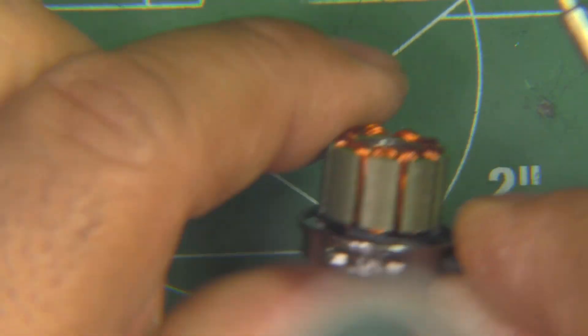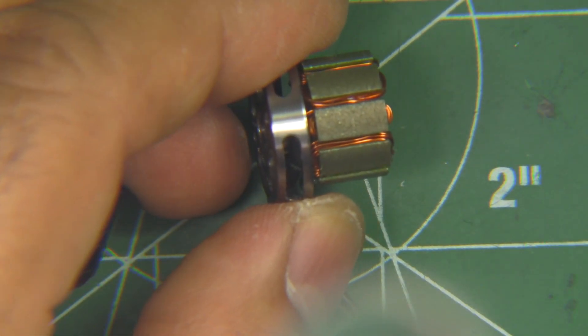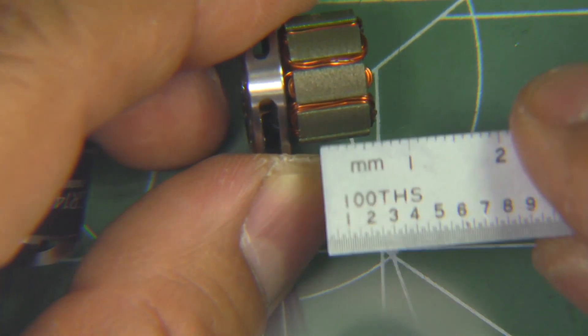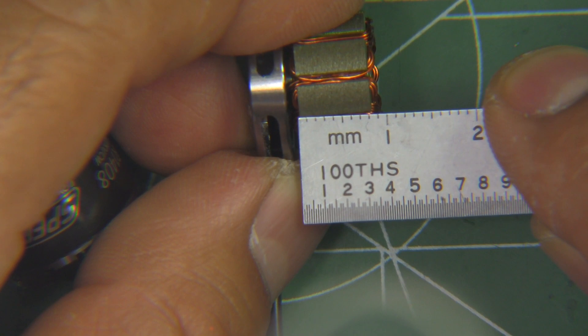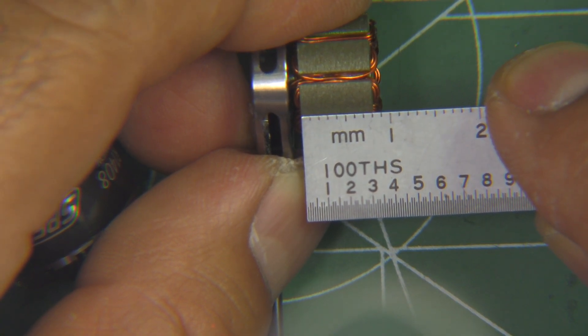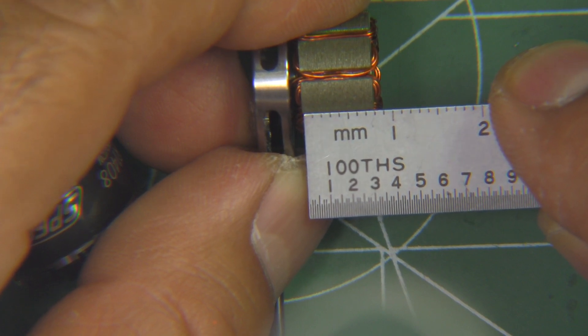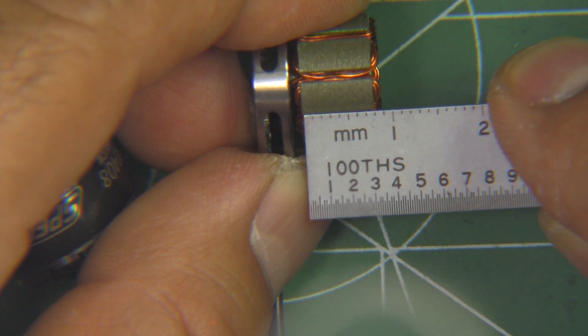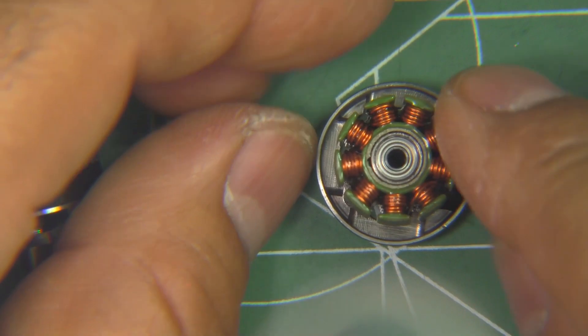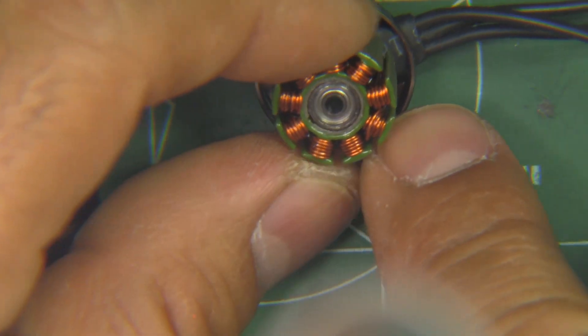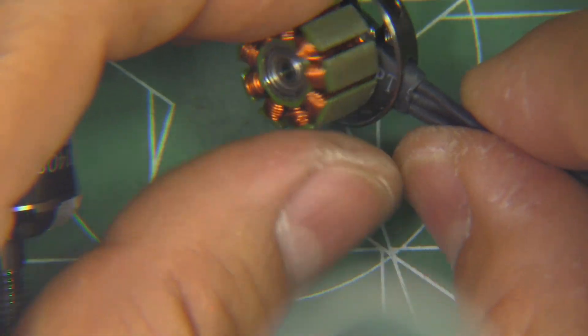And then the stator laminations, yeah they definitely look to be 0.2 millimeters. Let's measure the stator height - so as best as we can measure here with this ruler, yeah it looks to be the standard 8 millimeter height on the stator. So pretty good. And the windings, yeah they look pretty decent, pretty nice. Nothing wrong with the windings there, they look pretty good.